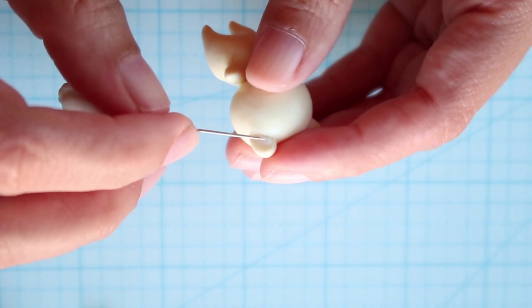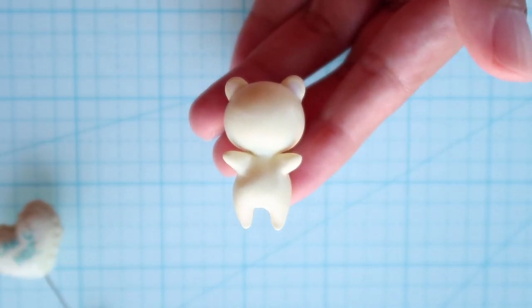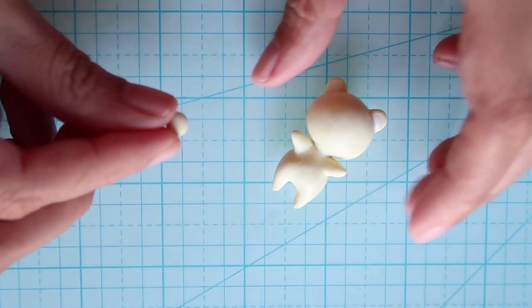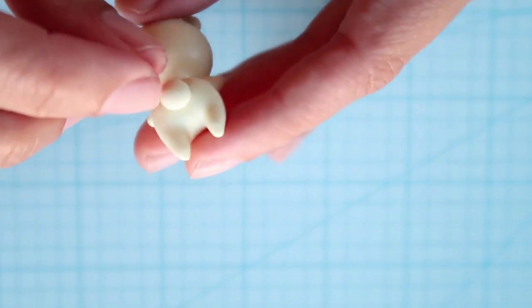Use a needle tool to secure them on and then take another small ball of the same colour clay and then place it on the back for the tail.